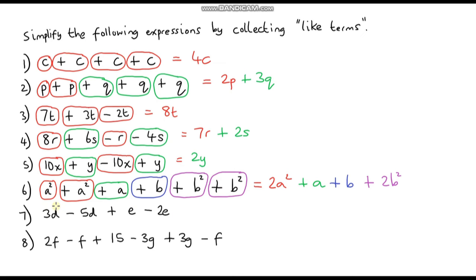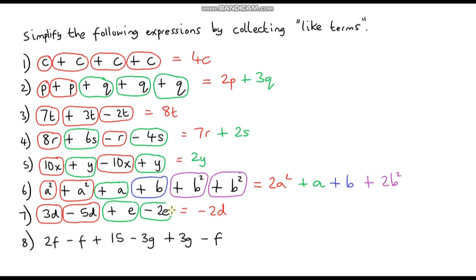Question 7: looking at the D terms — 3D minus 5D. Starting with 3 and taking away 5 gives minus 2, so we have minus 2D. This is where you move away from thinking about physical items — think of it like 3 degrees getting 5 degrees colder, leaving minus 2 degrees. For the E terms: plus 1E minus 2E. Starting with 1 and taking away 2 gives minus 1, so it's minus E.